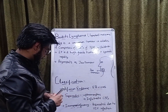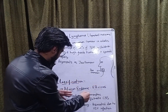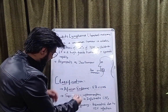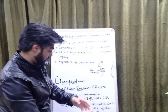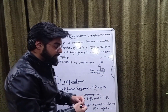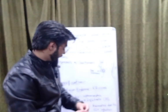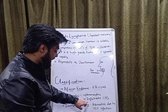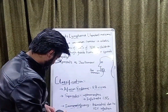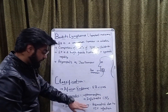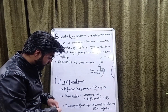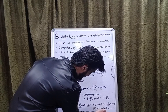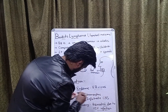Epstein-Barr virus can be a causative agent in African endemic type. The sporadic type is another form of Burkitt's lymphoma — it may have multinucleated cells, they are pleomorphic, and they infiltrate the CNS. In immunodeficiency cases, they are mostly associated with HIV infections — this is a very important point.